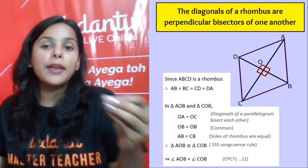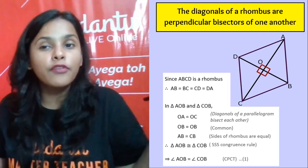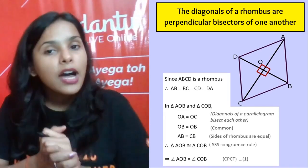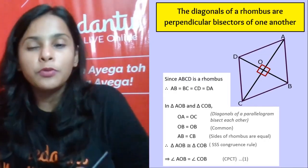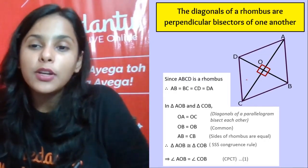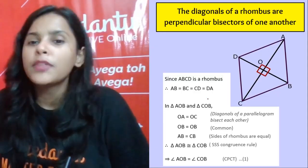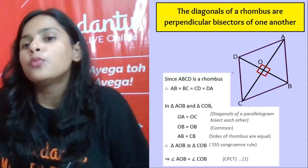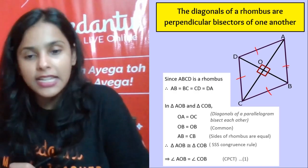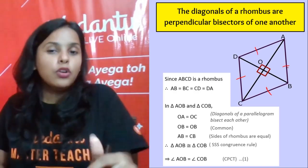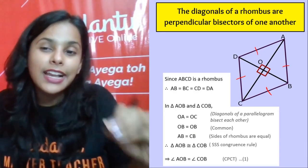Now let's prove that the diagonals of a rhombus are perpendicular bisectors of one another. In order to prove that, we are going to draw rhombus ABCD. We know that all the sides are equal to each other. Now let's do this work — just take triangle AOB.